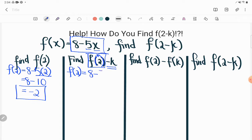So I'll find f of 2 first and that was 8 minus 5 times 2, and as we figured out that was the same as 8 minus 10 or negative 2. So now if I'm going to take that and I'm going to subtract k from it, f of 2 we just figured out was negative 2, so I can write negative 2 and then I'll just write minus k.